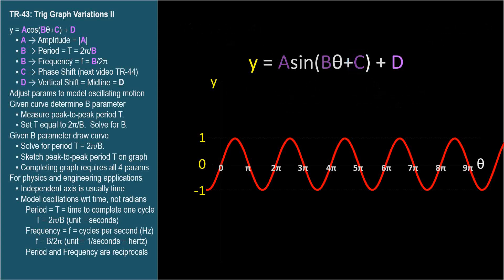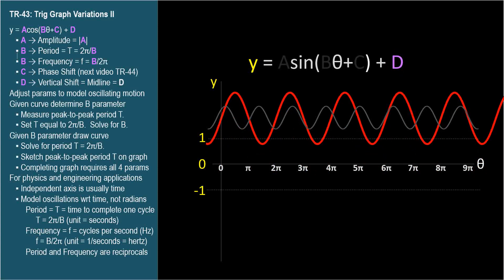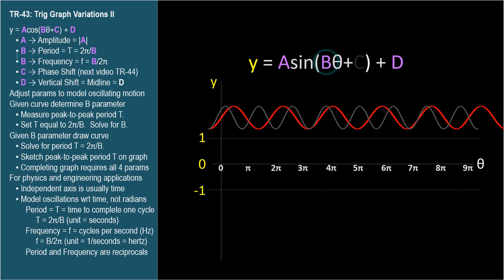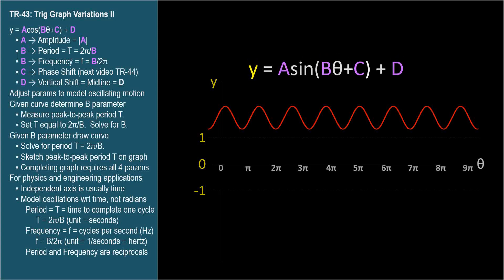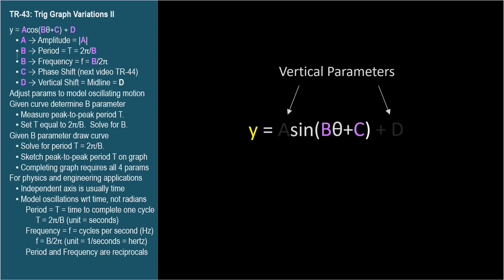By adjusting these four parameters, we can model any pure oscillating motion. With the d parameter, we set the midline. With the a parameter, we match the amplitude. With the b parameter, we adjust the period. And with the c parameter, we tune the horizontal phase. a and d are the vertical parameters. b and c are the horizontal parameters.